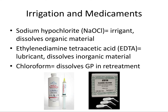Between each file used to shape the canal, you must irrigate or flush the canal with chemical agents — the process is file, flush, file, flush, etc. One of the main irrigants is sodium hypochlorite, which is bleach. We use a very diluted bleach for root canals, and it dissolves organic material, meaning bacteria. There's also EDTA — ethylenediaminetetraacetic acid — which is a lubricant and dissolves inorganic material, specifically the smear layer of dentin shaved off during filing.